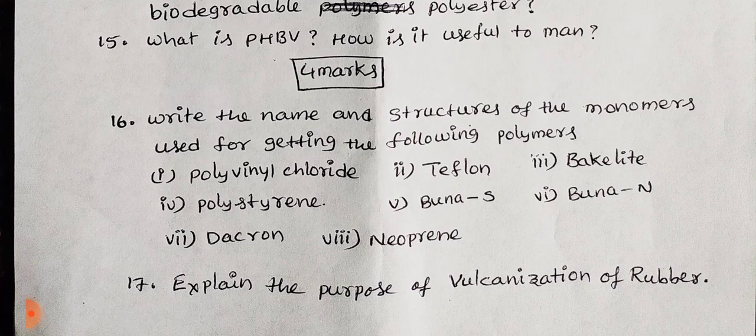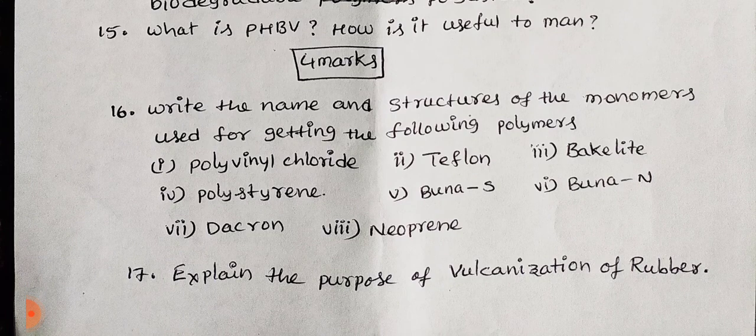Polymers listed: PVC, Teflon, Bakelite, polystyrene, neoprene, Dacron — these carry about 2–4 marks. The 17th question: explain the purpose of vulcanization of rubber. Vulcanization of rubber — the key agents are sulfur and heat. This is a 2-mark question.